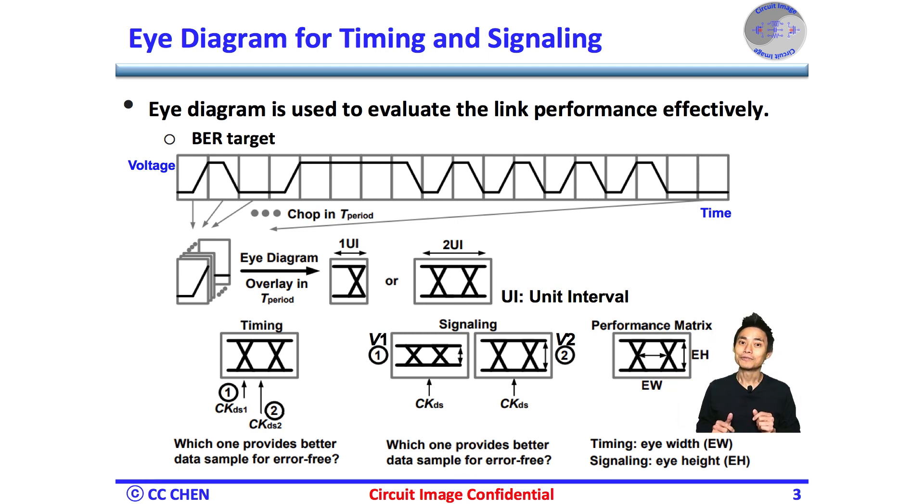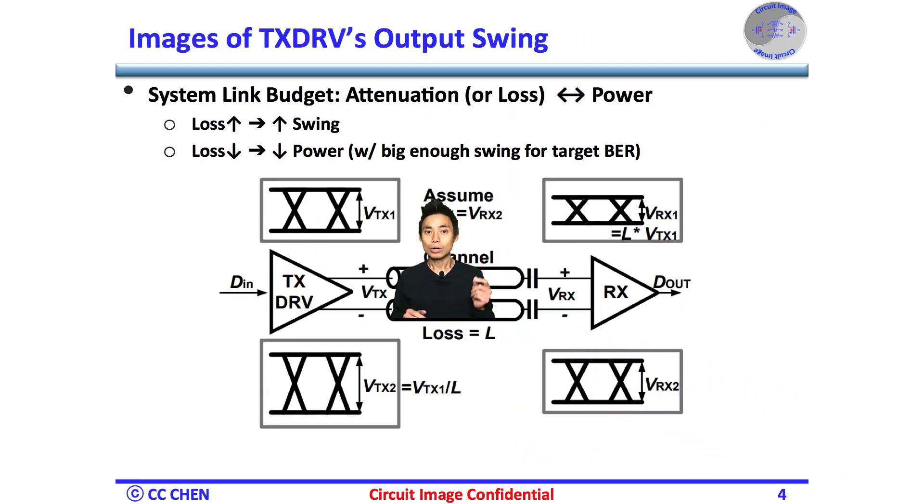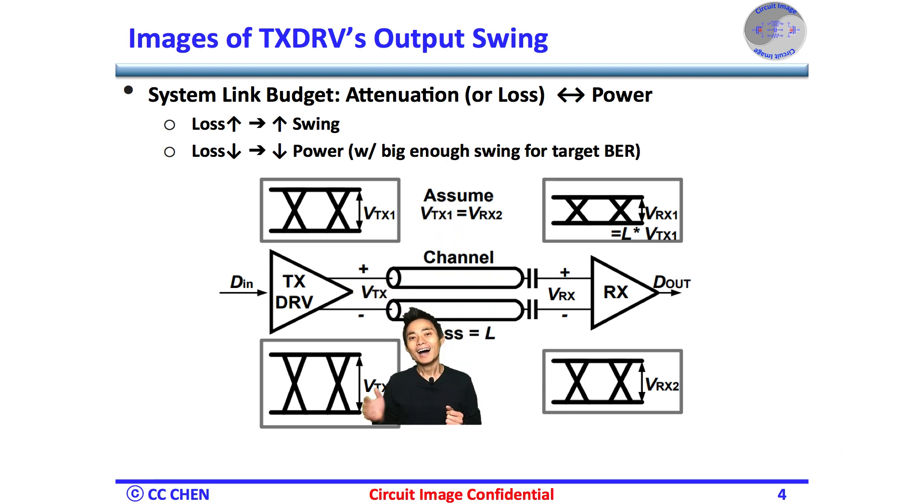Let's start with the link budget from the eye height perspective one by one, and you could have a better idea of how to evaluate the link budget from those images one by one. Let's start with the TX output swing, which was already shown in the white TX driver video.